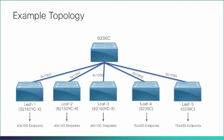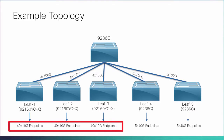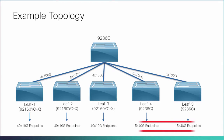The number and types of leaf switches required in your IP fabric depend on the number and types of endpoints in your broadcasting center. For example, if you have video switchers and IP cameras that require 90 by 10 gig ports and gateways that require 30 by 40 gig ports, your topology would look like this.